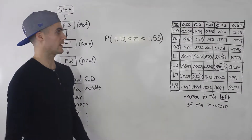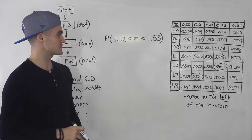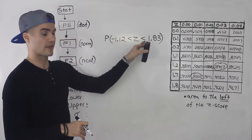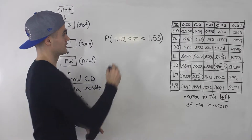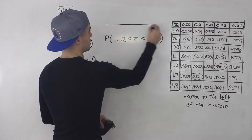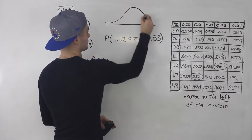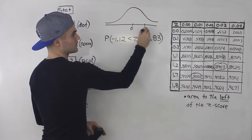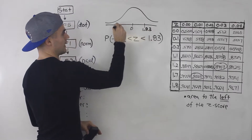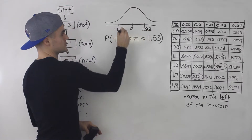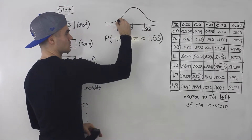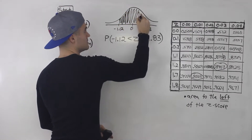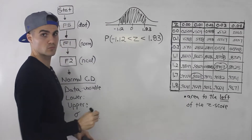Let's do one final example for this video. Let's find the probability that z is between negative 1.12 and 1.83. If we draw this out, zero is in the middle, 1.83 is to the right, and negative 1.12 is to the left. We're finding the area between those two values.